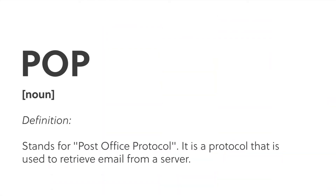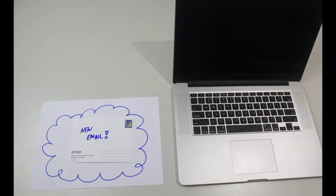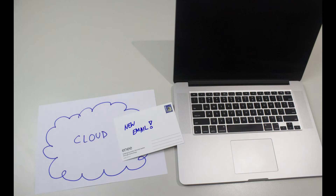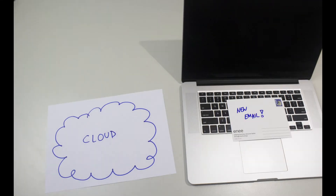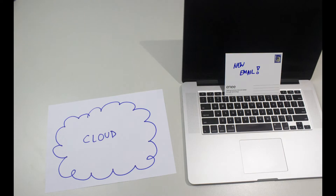Most basic email systems use a system called POP, which is a very outdated and old email system that basically only lets you receive email on one computer at a time. So if someone sends you an email, your computer will download it from the server — downloading the only copy of that email. So if you've got a second or third computer, unfortunately that email won't be available as it was already downloaded by the first computer.